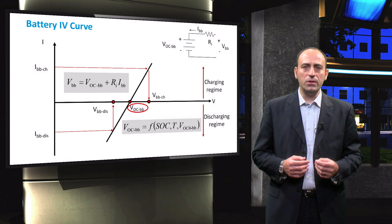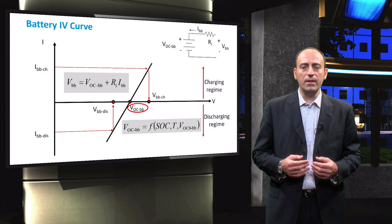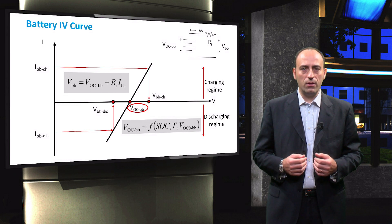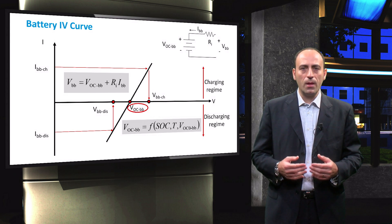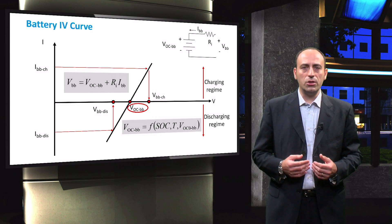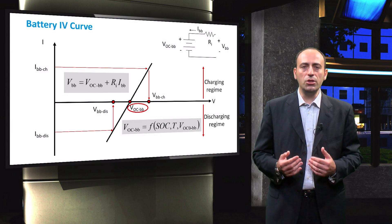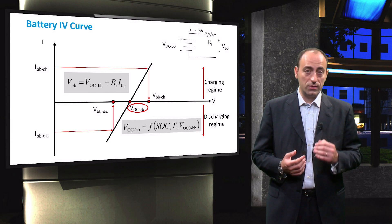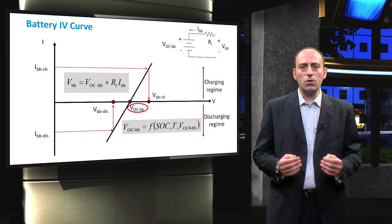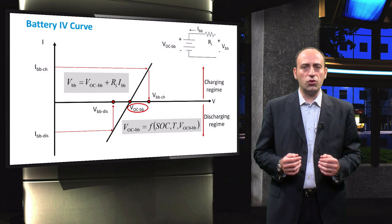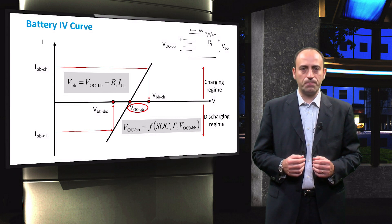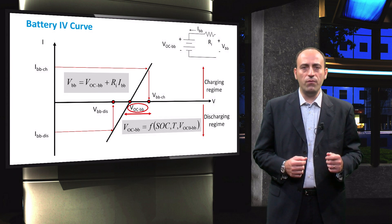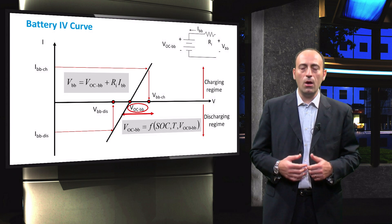Further, the open-circuit voltage of the battery bank is itself a function of state of charge, temperature, and other parameters. Thus, in reality, the open-circuit voltage will also vary depending on the operating condition of the battery. But this parameter is simplified in this design step and is assumed to be a constant value under all state of charge and temperature changes. It is assumed to be equal to the rated open-circuit voltage VOC0_BB of the battery bank.